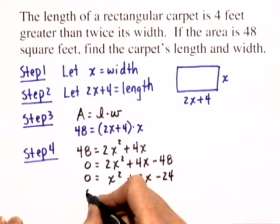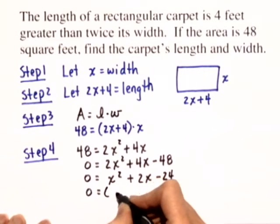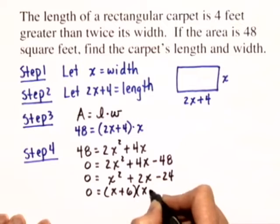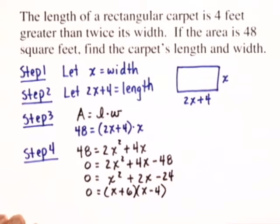This will factor nicely. We'll have 0 equals x plus 6 times the quantity x minus 4. It's always a good idea to check to make sure we factored correctly. That looks fine.